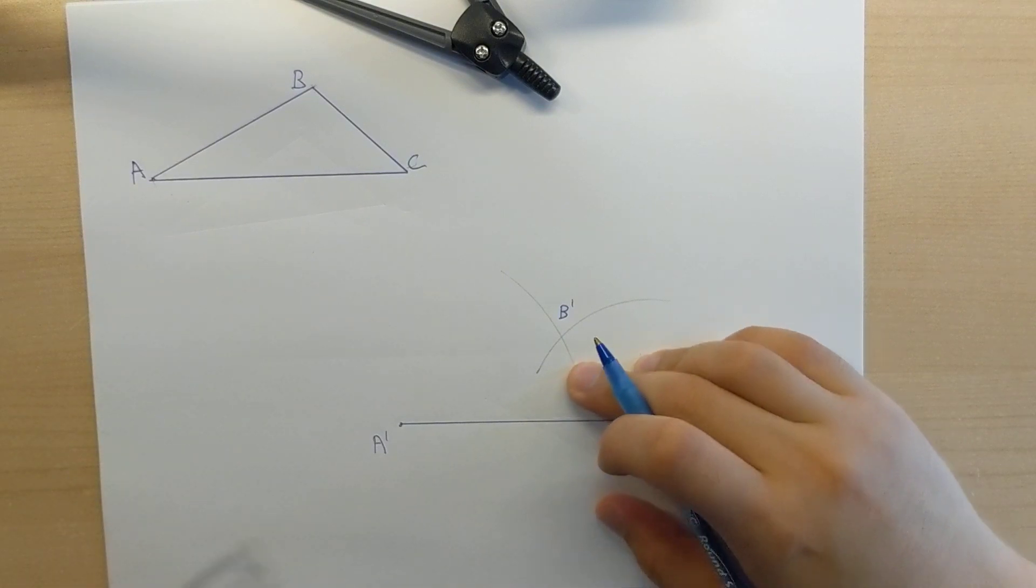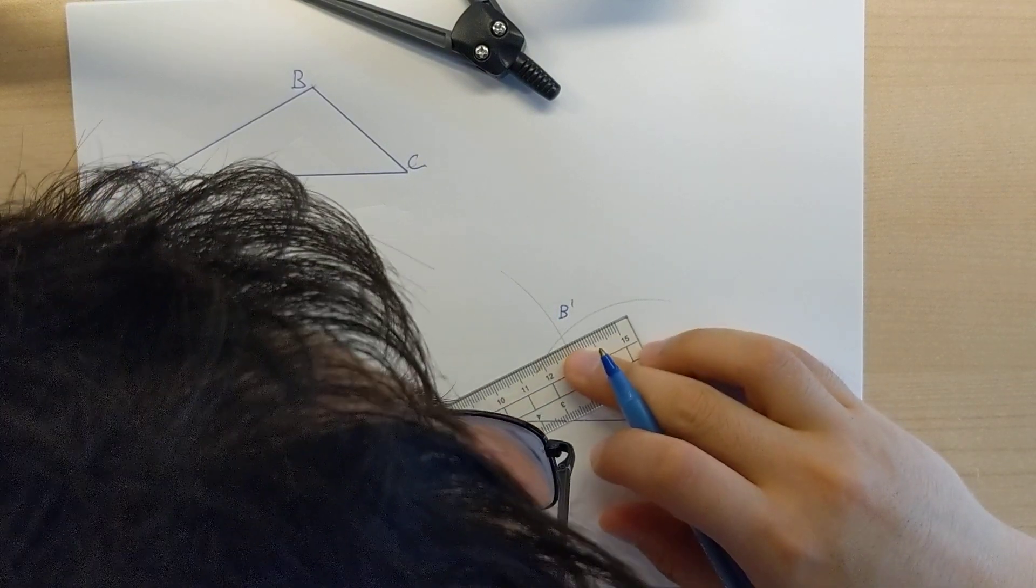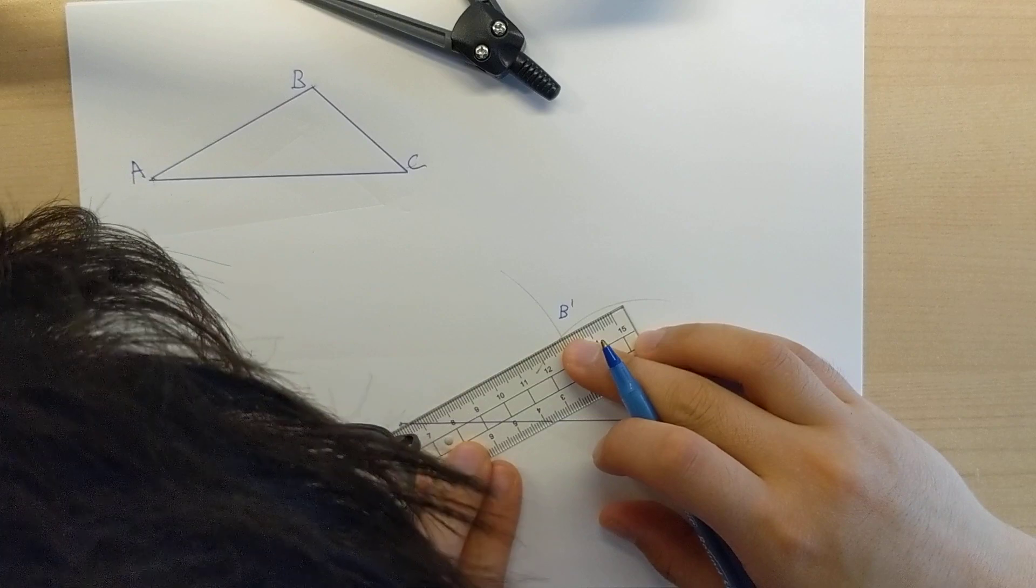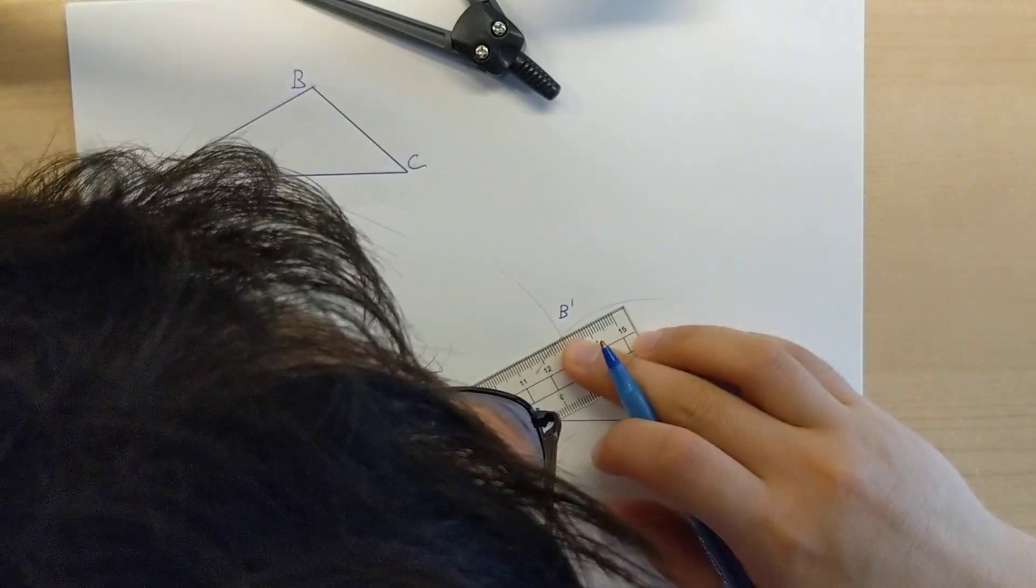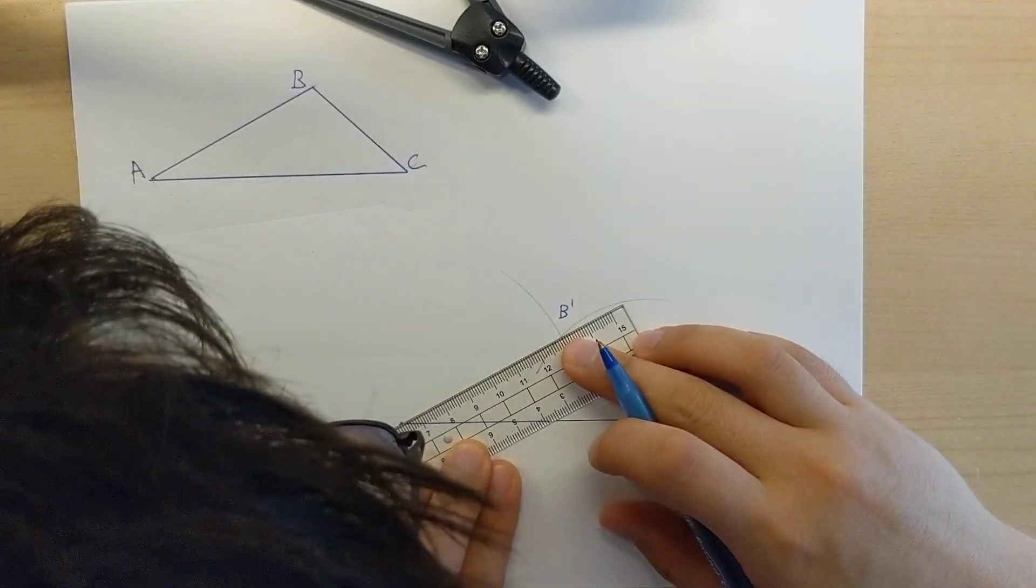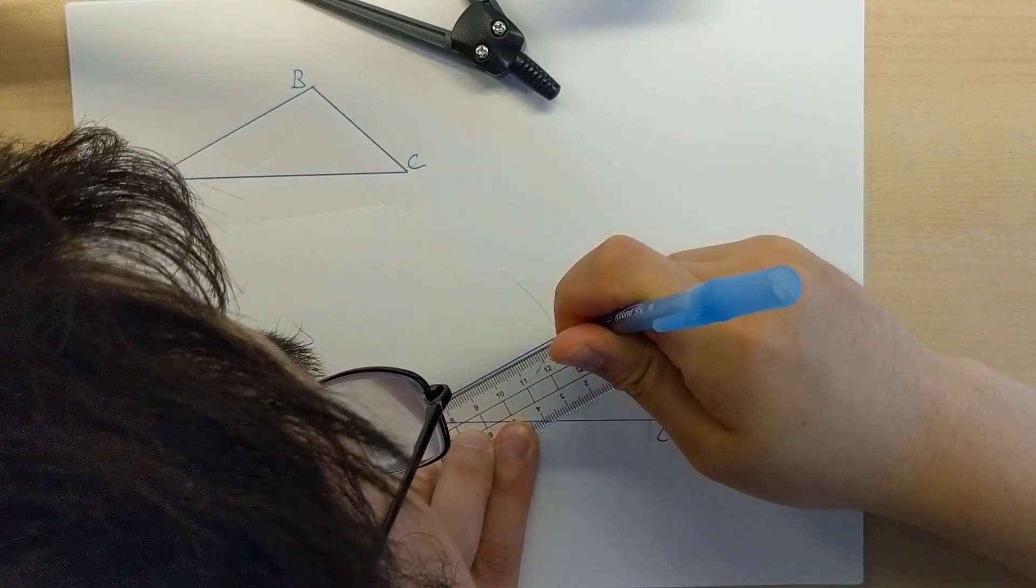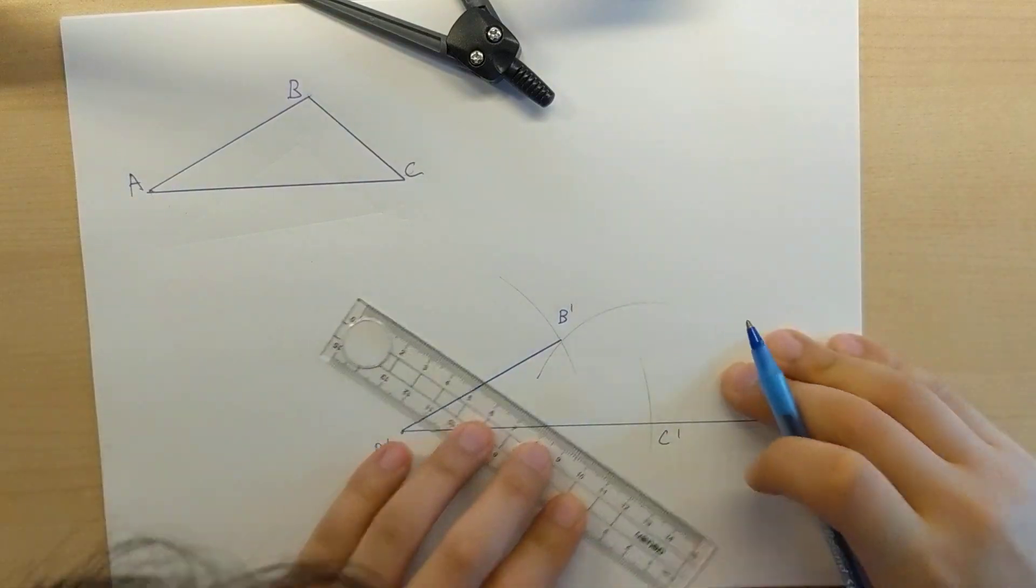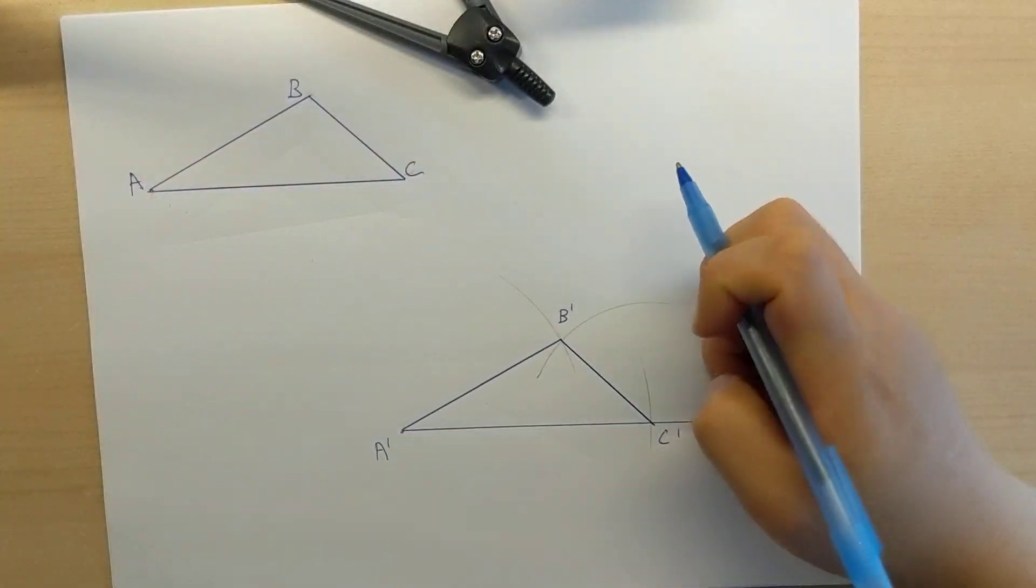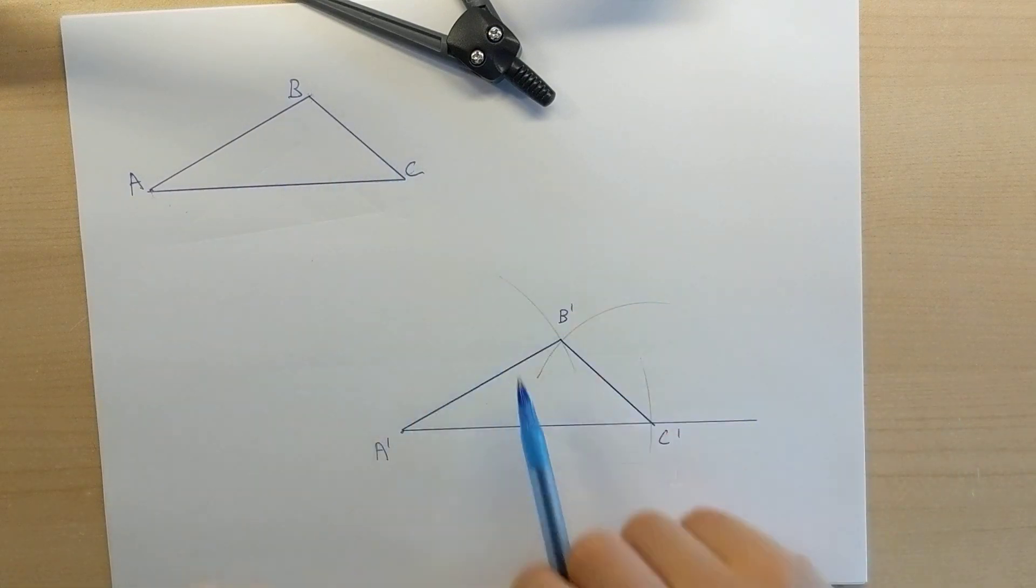And what I'm going to do with this is connect those two together. And there you have it. This is ABC, and A prime, B prime, C prime copied.